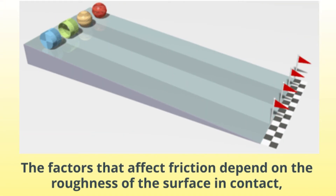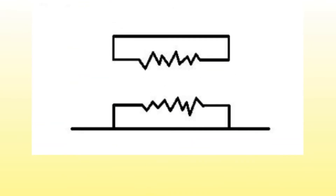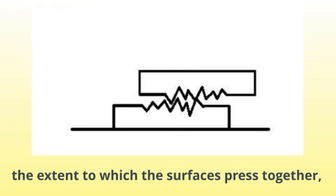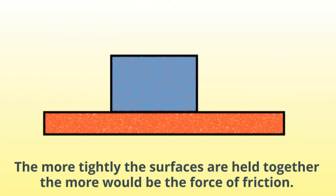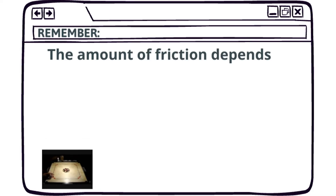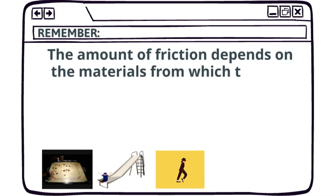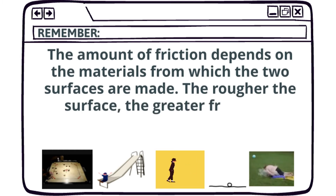The factors that affect friction are: Number one, the roughness of the surface in contact. Number two, the extent to which the surfaces are pressed together. Number three, the nature of the surface. The more tightly the surfaces are held together, the greater the force of friction. Remember, the amount of friction depends on the materials from which the two surfaces are made. The rougher the surface, the greater the friction produced. The smoother the surface, the smaller the friction produced.